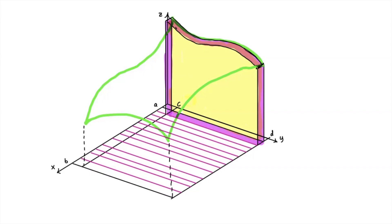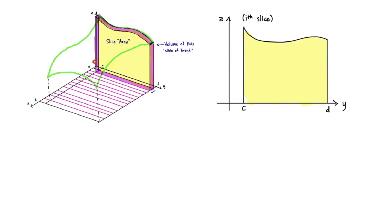Let's see what happens if we take this approach. Consider the i-th slice. The width of the slice — like the width of the crust of the bread — we can think of as Δxᵢ, a little change in the x-axis. This bread slice volume can be viewed as a prism: multiply the thickness of the bread times the area of the face where you'd spread the butter. So the volume of this bread slice is approximately the area of the face times the thickness Δxᵢ. What is the area of the face?